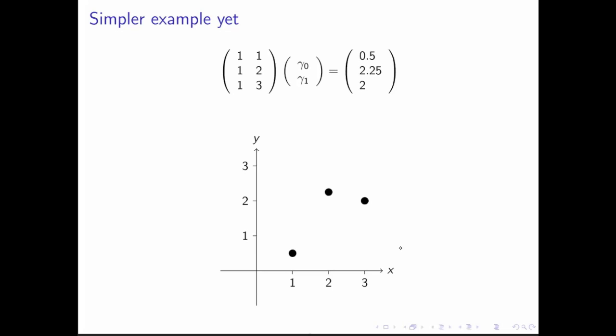So in this particular case, we have the point 1, 1/2. That's this point right here. 2, 2 and 1/4. That's this point right here. And 3, 2. That's this point right here. We'd like to determine the best line that approximately goes through these points. So how do we do that?